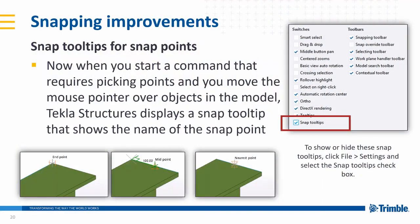There are also improvements to snapping. These now mean that when you actually snap to a point, it will give you a text highlight, as you can see in the drawings here. So you can see end point, mid point, nearest point.